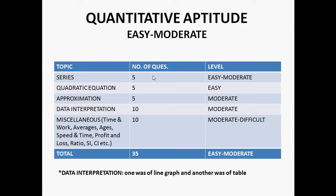There were ten questions from data interpretation of moderate level. In DI, there were two sets - one was a line graph and another was a table. Ten questions were from miscellaneous topics. The level of those questions was moderate to difficult.